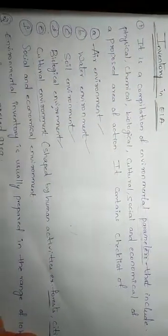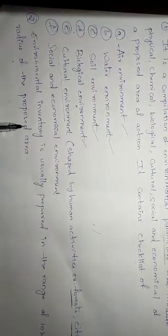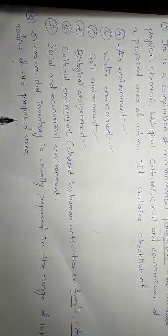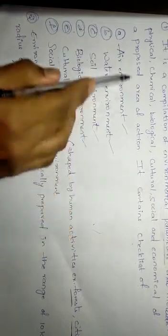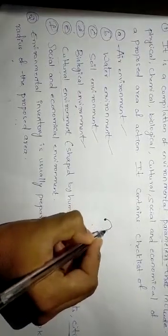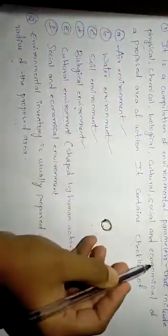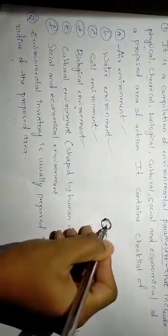And environment inventory is usually prepared in the range of 10 km radius of the proposed area. What this means is, for example, if project is implemented in this area, then all these parameters, whatever we have discussed till now, these parameters are taken into consideration of this area only.